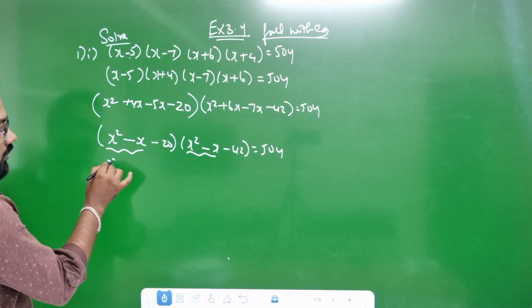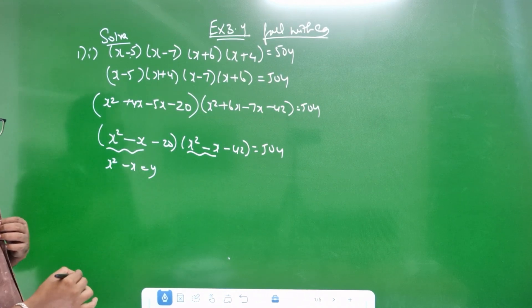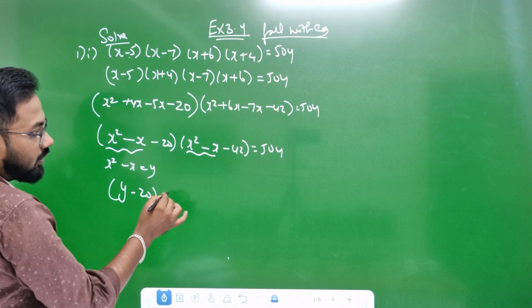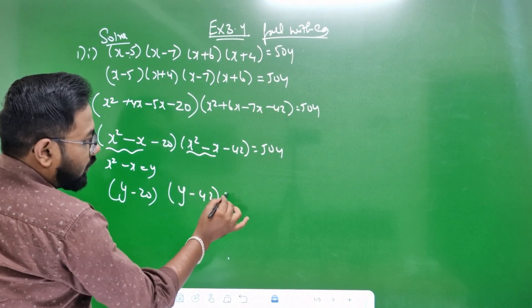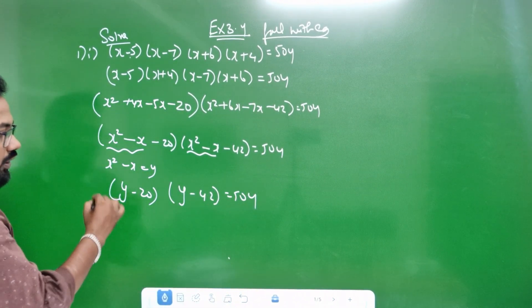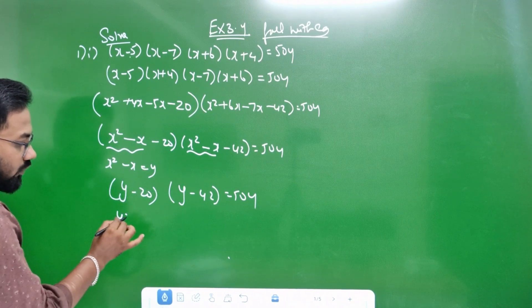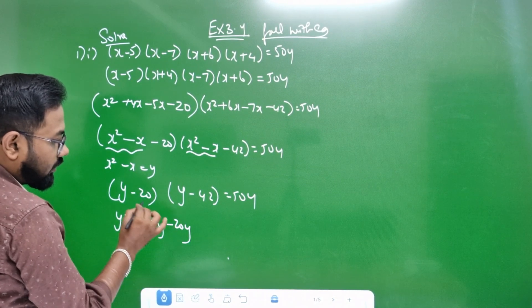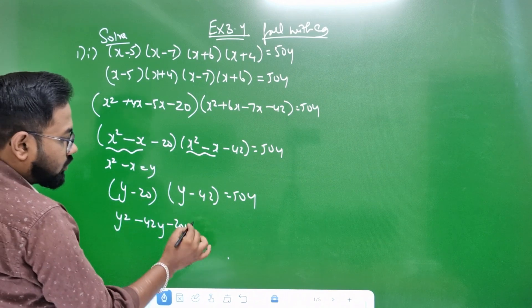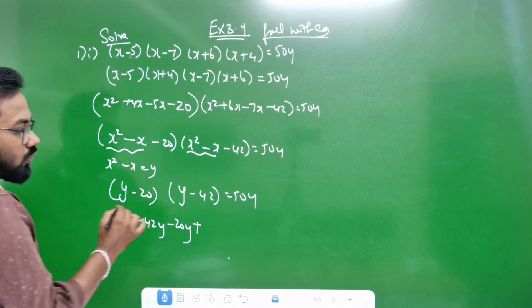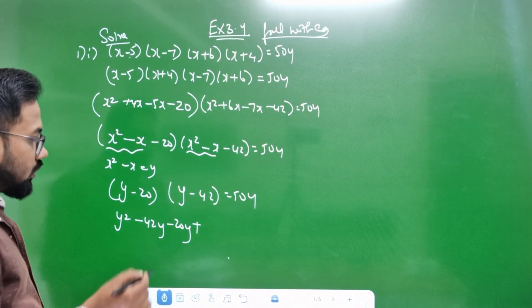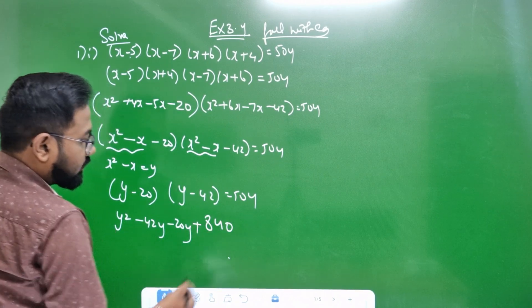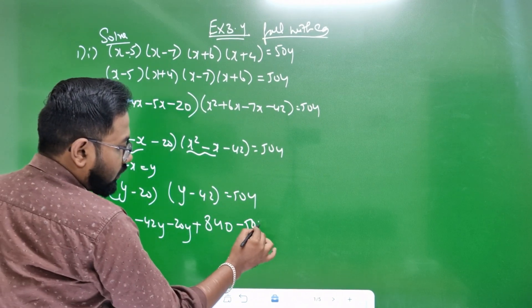x square minus x is equal to y. y minus 20 is equal to y, y minus 42 is equal to 54. We will put this two into: y into y is y square. y into 42 is equal to 42y. y minus 20y, y minus 2 minus plus. 42 into 42 is equal to 840. That is equal to 54.